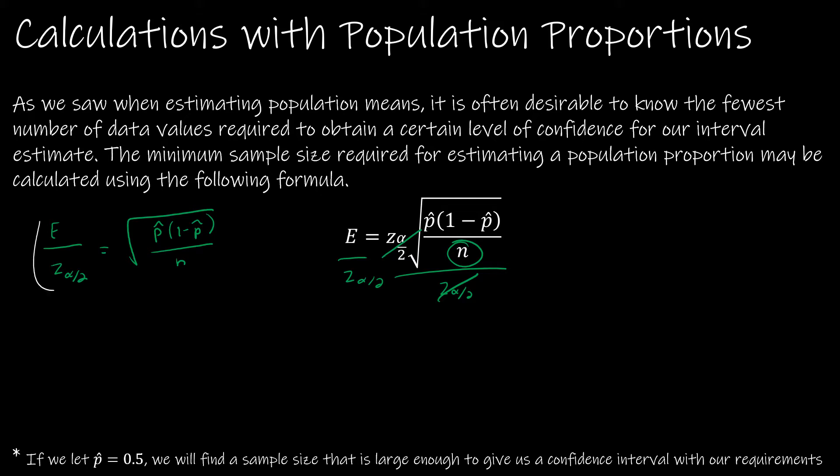Now what I want to do is square everything because I need to get rid of the square root. So I'm left with e over z alpha over 2 squared equals p hat q hat over n. Notice I've switched to q hat instead of 1 minus p hat. I'm now going to multiply by n on each side, and then take each side times z alpha over 2 over e squared.